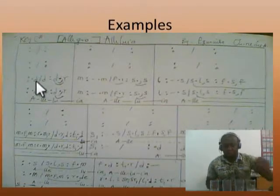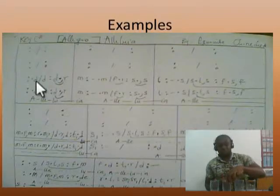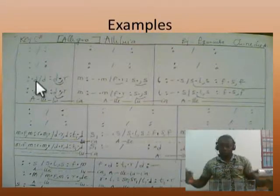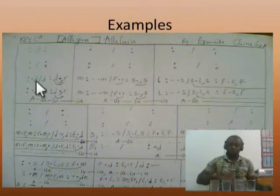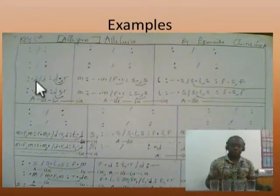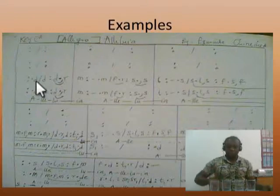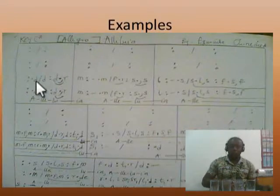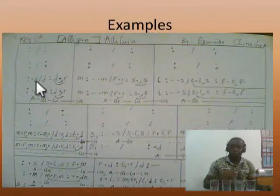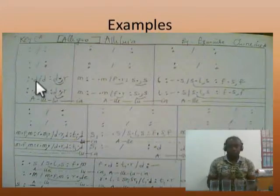Because of these dots, before you continue, that means the first note is at the top of the second beat here: two, three, four, one, two, three, four, one, two. Do, do — see — one, two, do, do, do, do, do, re, do, re.